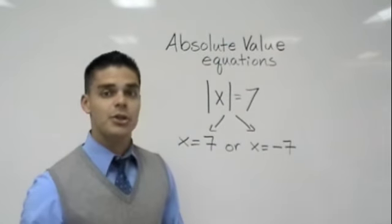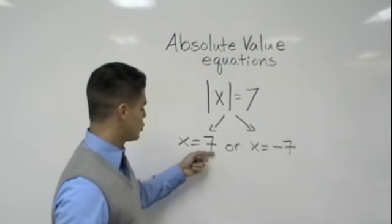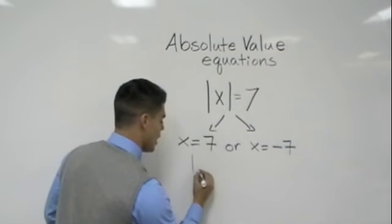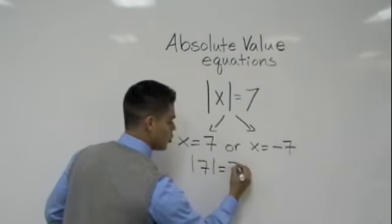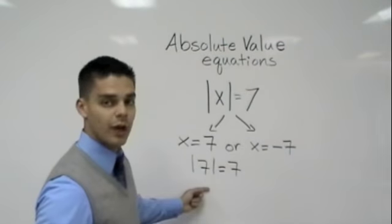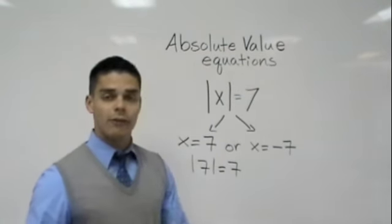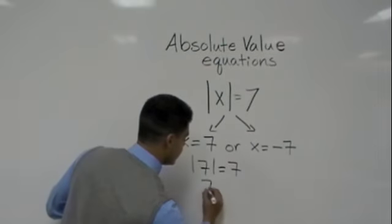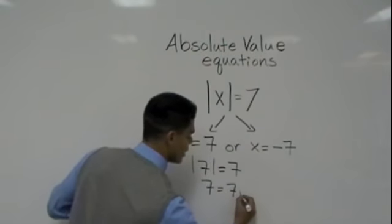Now you can take some time and check it by plugging it in. So we say if we plug a 7 in for x, we would get the absolute value of 7 should equal 7. Well, what's the absolute value of 7? We should have learned that absolute values are always positive. Therefore, that's a 7 equals 7. So that checks out.